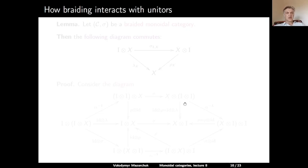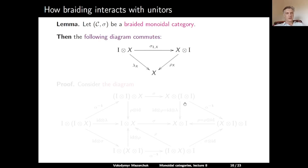Let us discuss how braiding interacts with unitors. Let C be a braided monoidal category with braiding sigma. Then the following diagram commutes: starting from I ⊗ X, the left unitor goes to X; alternatively applying sigma gives X ⊗ I, and then the right unitor gives X. This is exactly the unit coherence from the definition of a symmetric monoidal category.